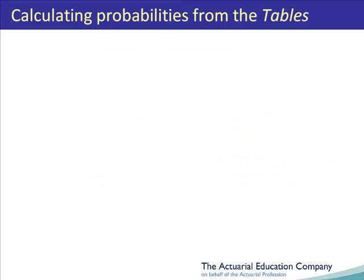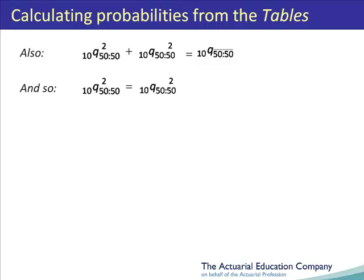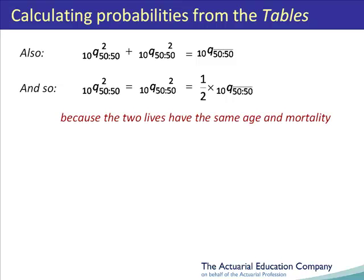You can use similar reasoning to evaluate second death probabilities in similar circumstances. The probability that Fred dies second within 10 years, plus the probability that Joe dies second within 10 years, is equal to the probability that the second death status fails within 10 years. Again, in this case the two probabilities on the left-hand side will be equal to each other and equal to one half of the total, because Fred and Joe have the same age and mortality.